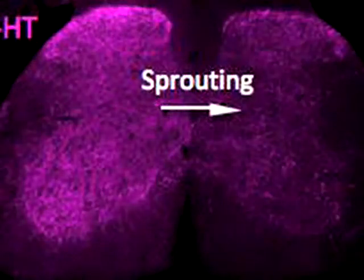There is another form of axonal growth after injury — it's called axonal sprouting. This is less well studied. Axonal sprouting refers to the growth of uninjured axons as a compensatory mechanism to replace lost connections after injury.